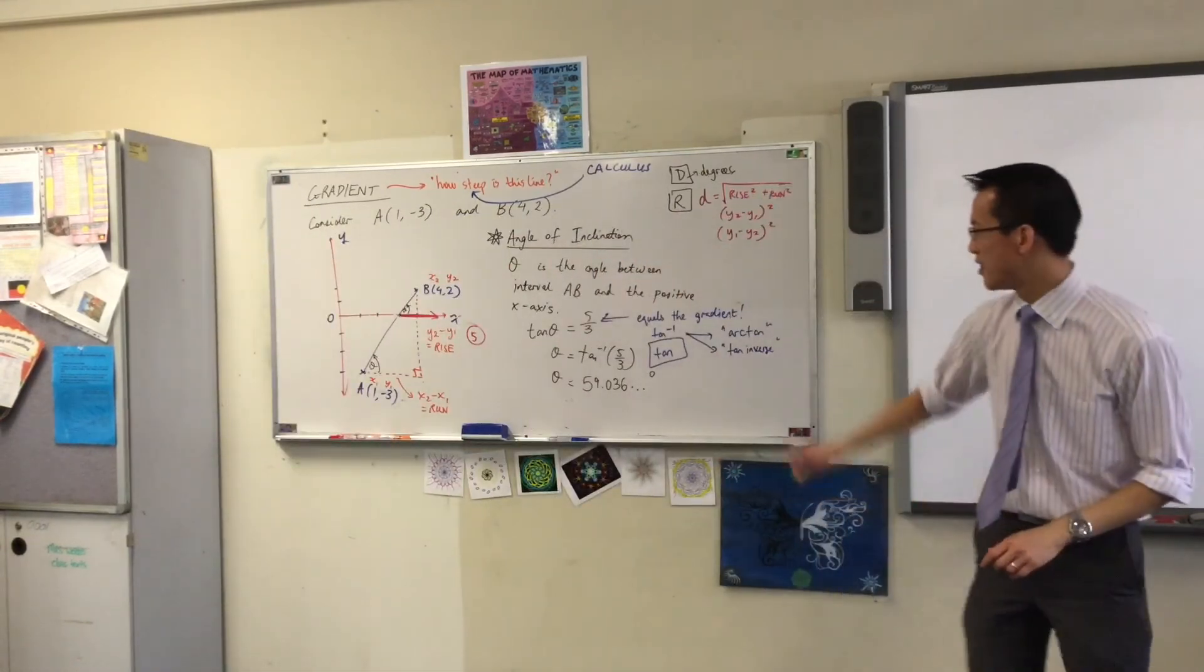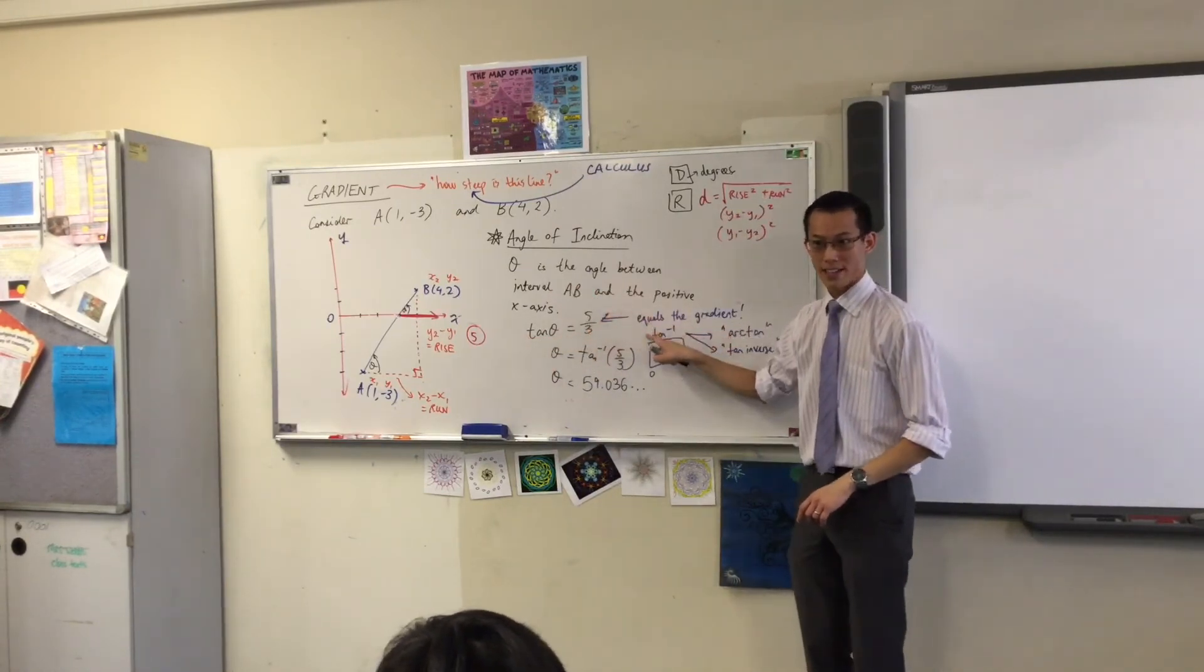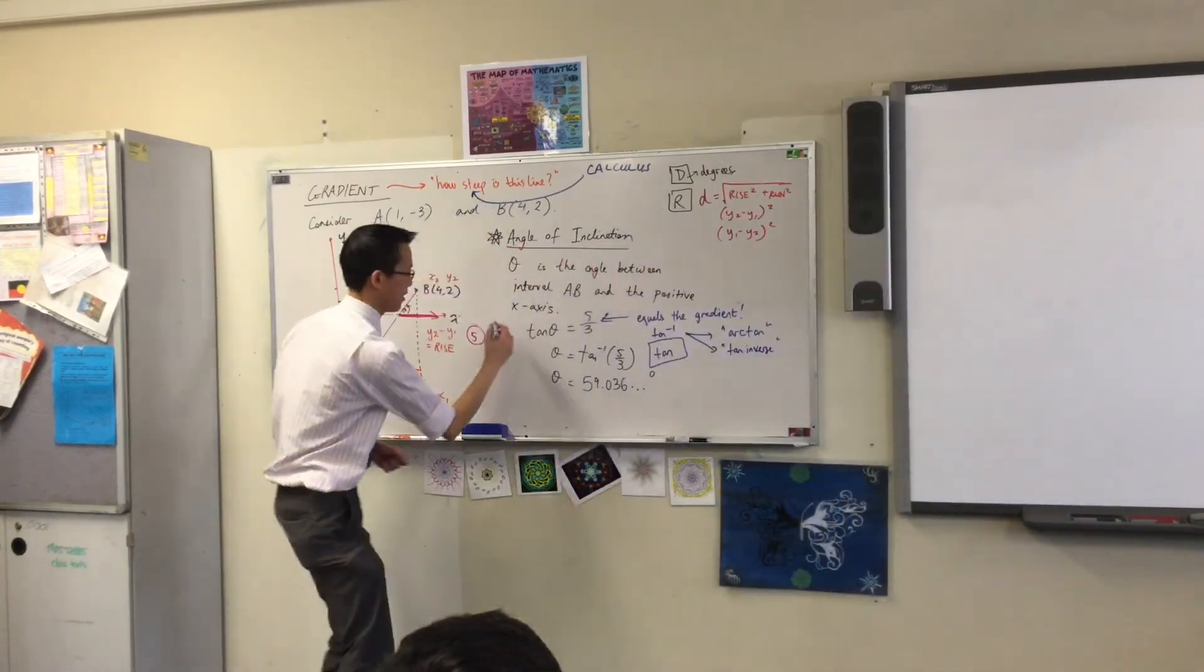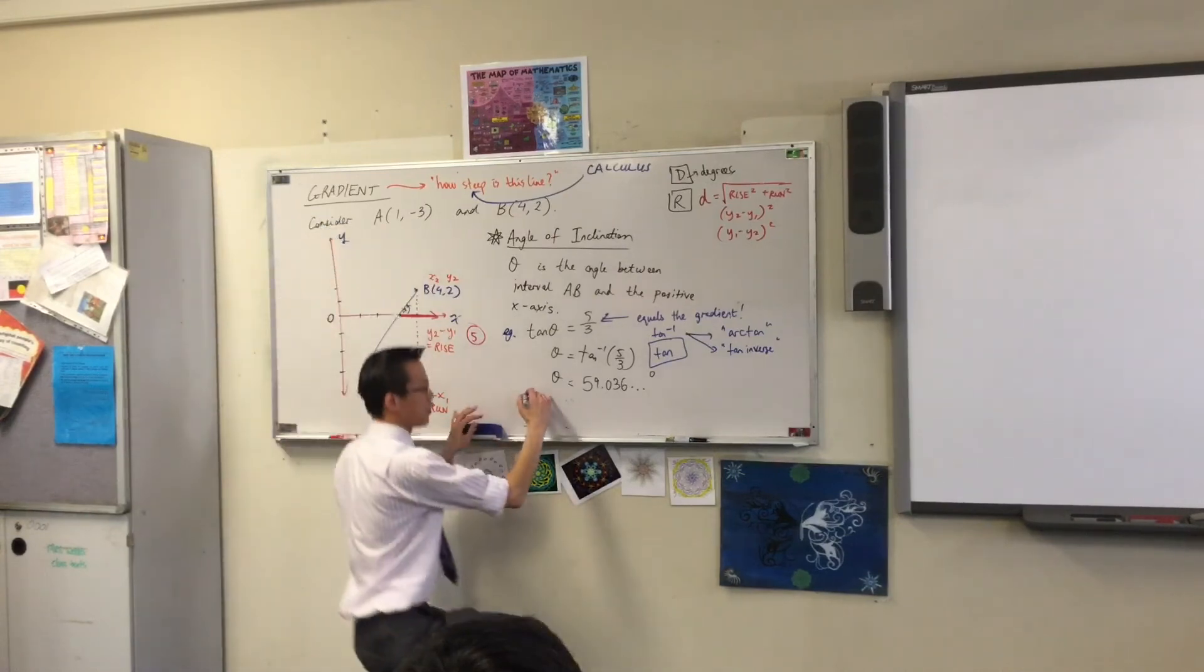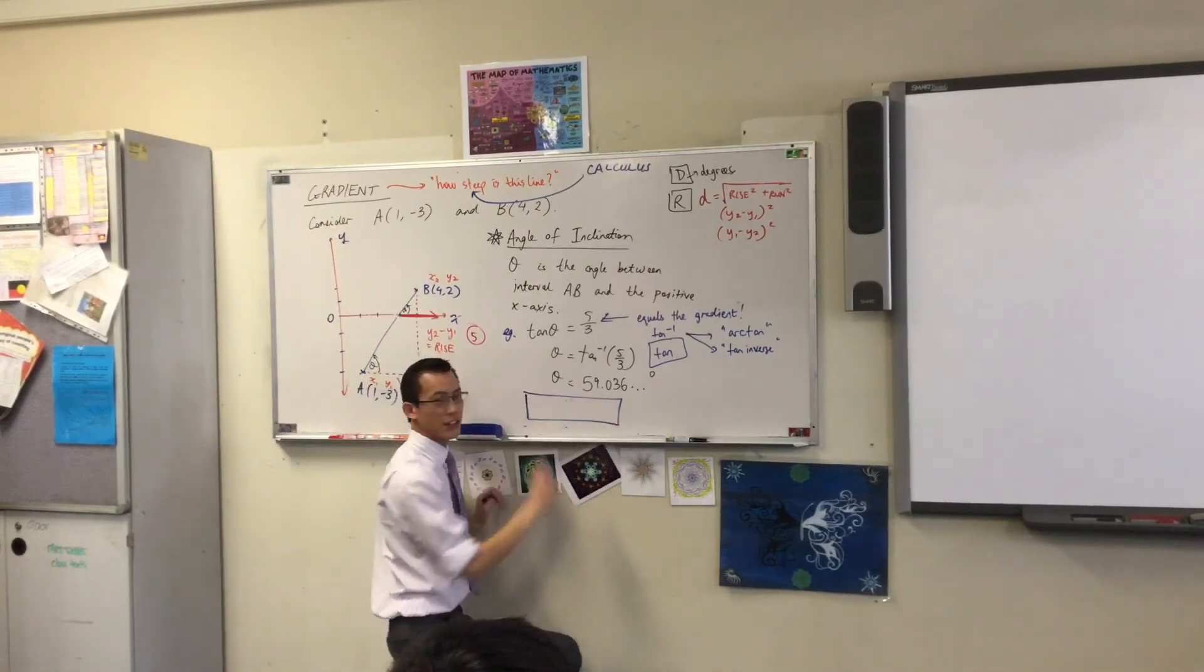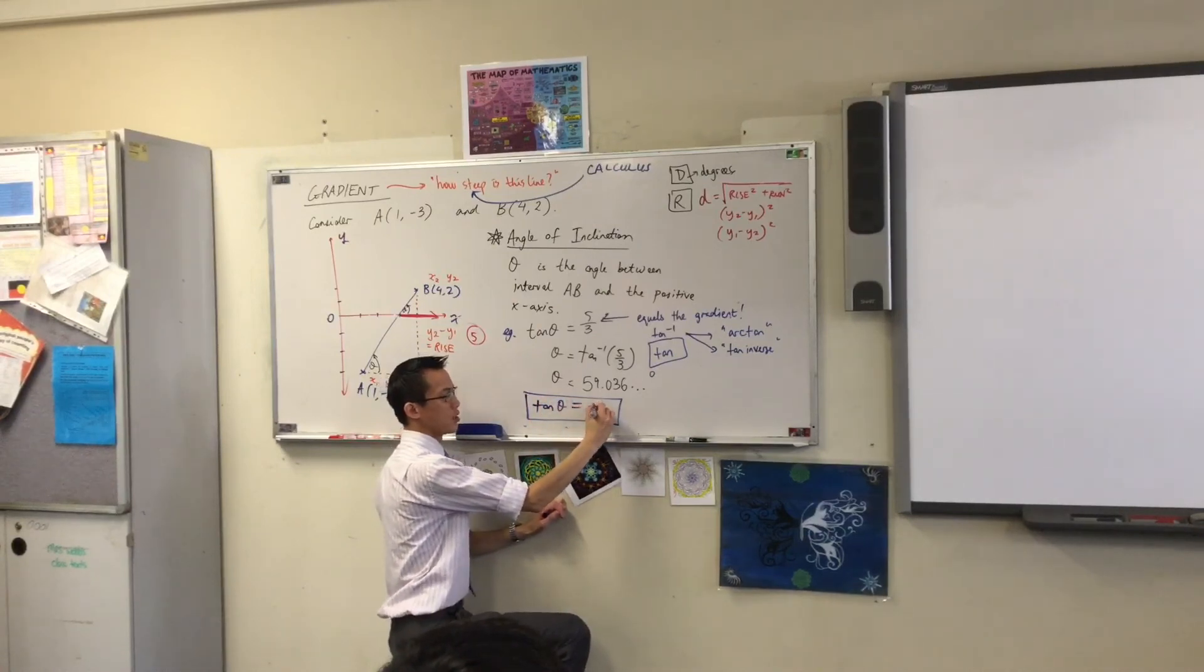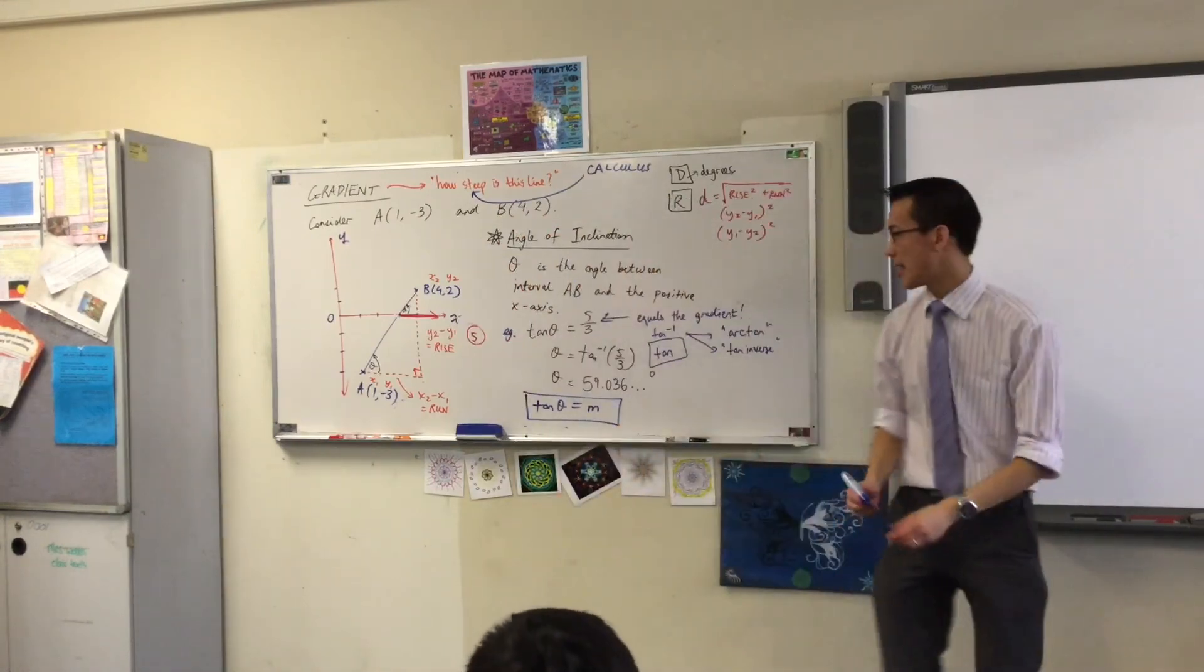Now, this idea of angle of inclination. Tan theta is the gradient. So underneath this, like this is just an example. Can you put in a really nice big box to find the angle of inclination? All you have to say is tan theta equals the gradient. If you know the gradient of the line, you can find the angle.